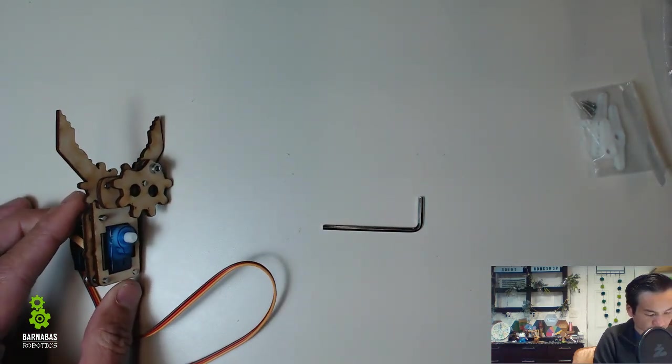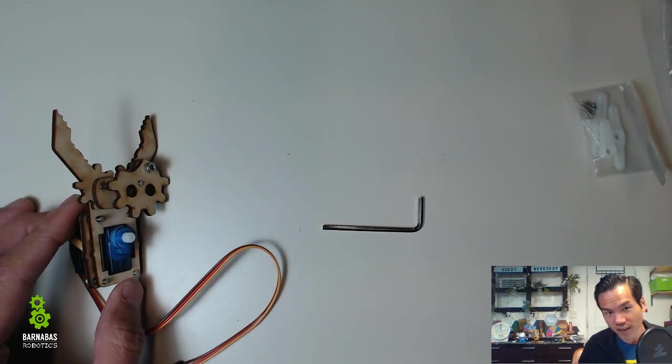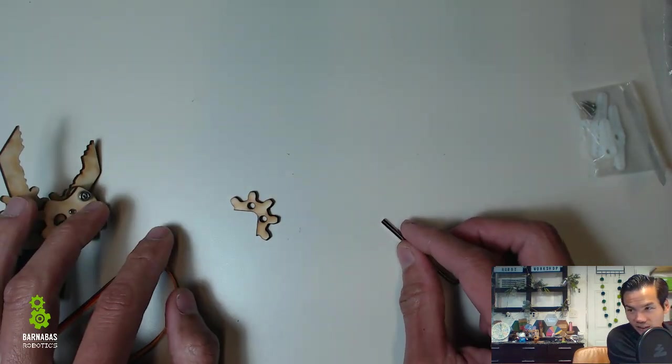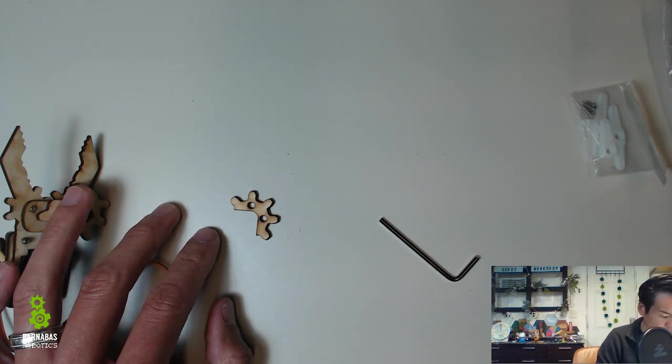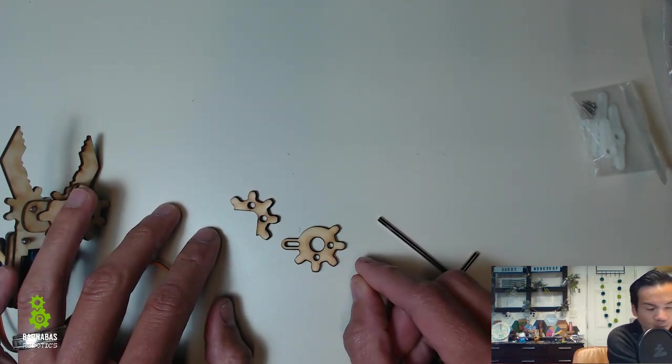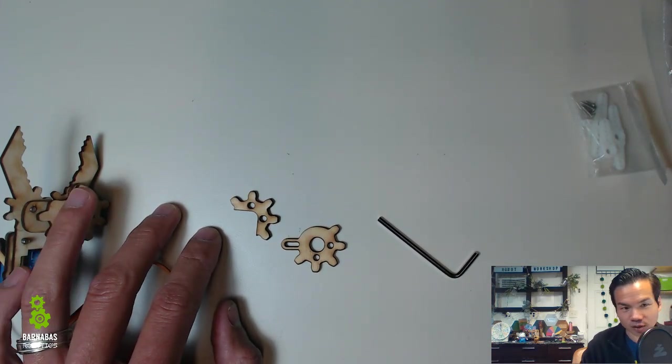We need a few pieces here. We need this wood piece here. Okay, we also need this wood piece here. This is part of the gear, the drive gear.